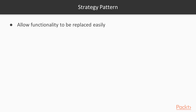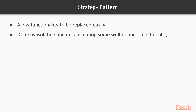In very simple terms, the goal of the strategy pattern is to enable replacing some kind of functionality of an application or a class without modifying code. This is usually done by isolating and encapsulating some well-defined functionality that needs to change based on certain requirements. Let's see first how not to do this by an example, and then we will discuss how to properly handle such situations.